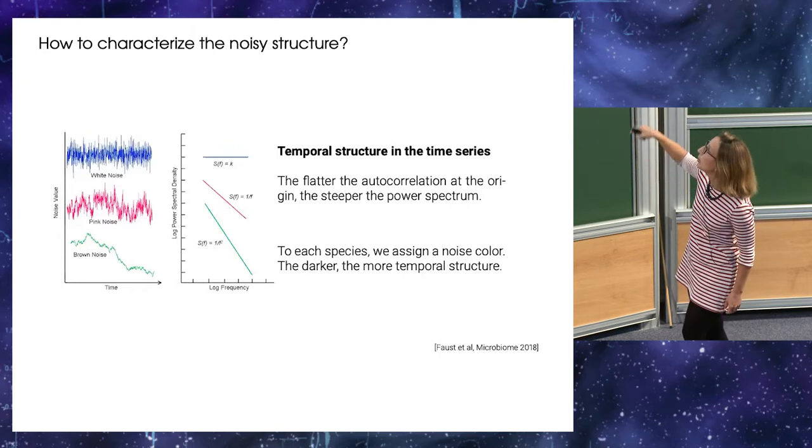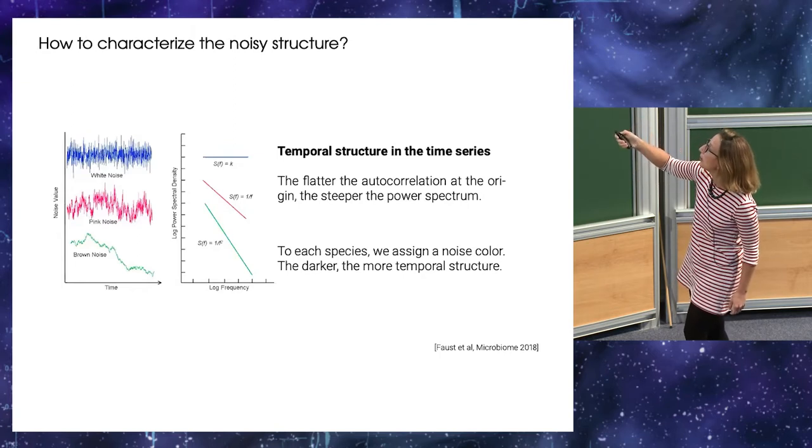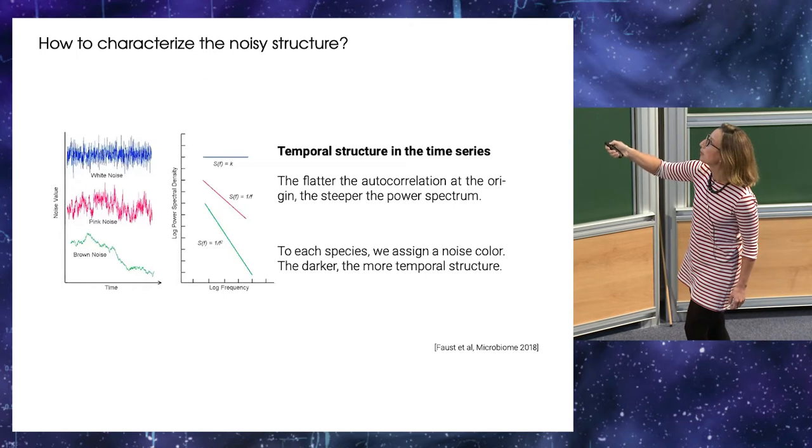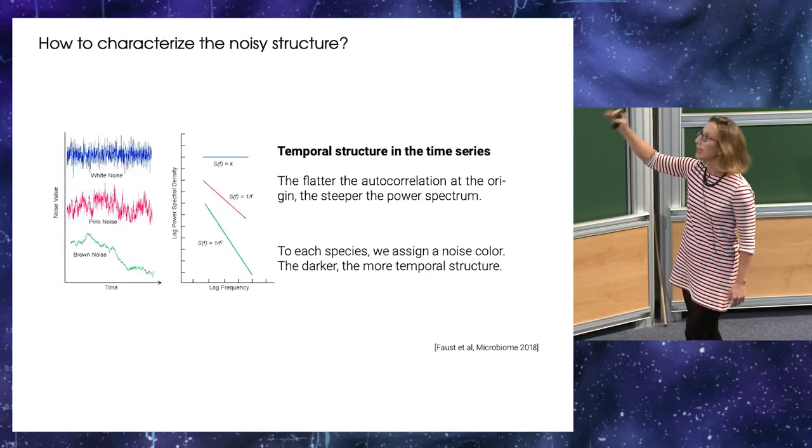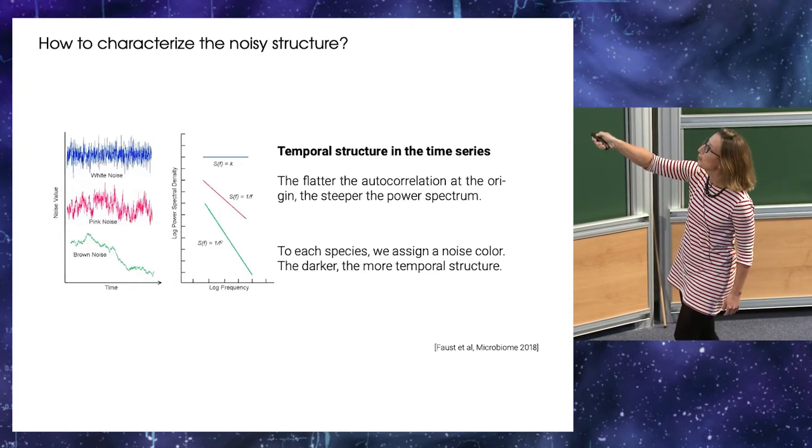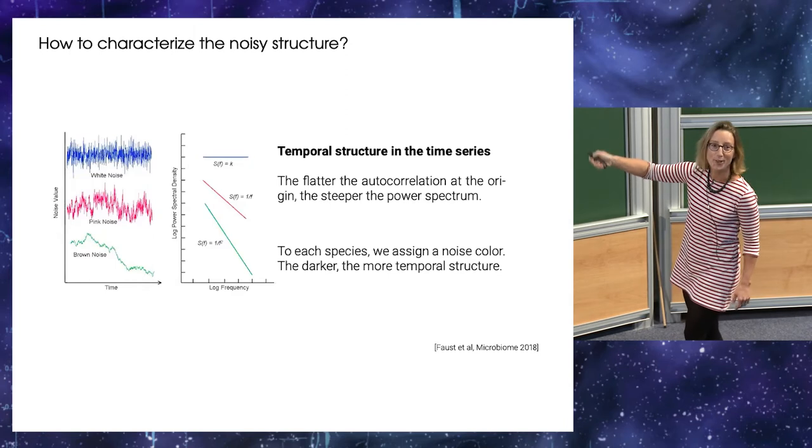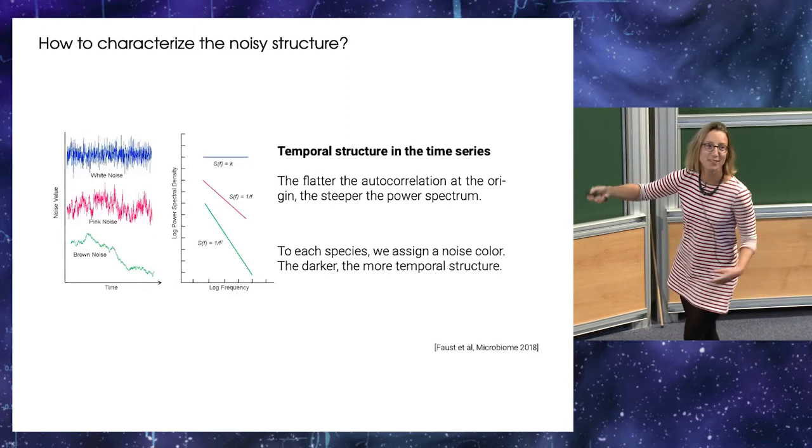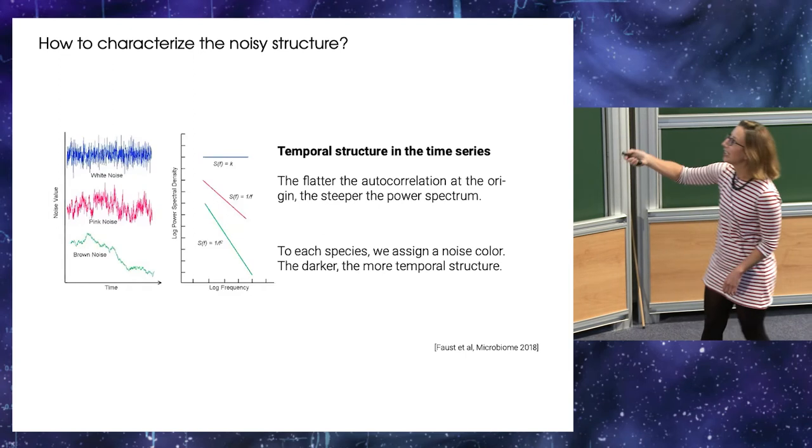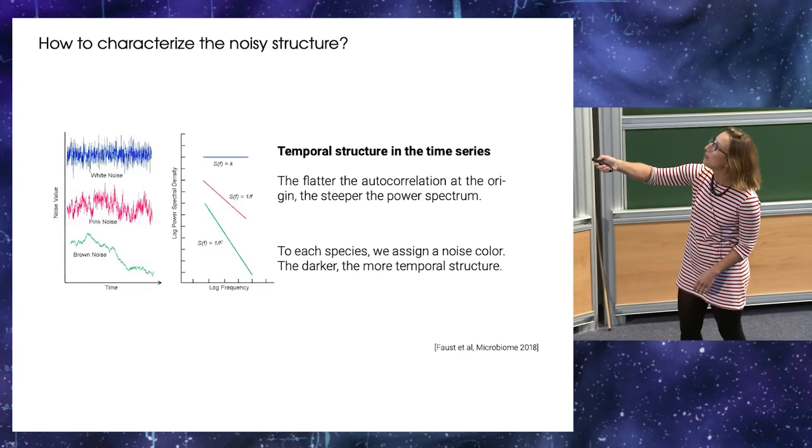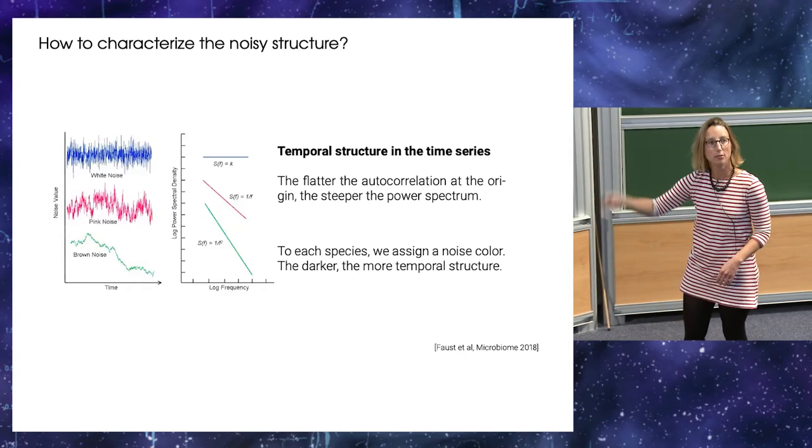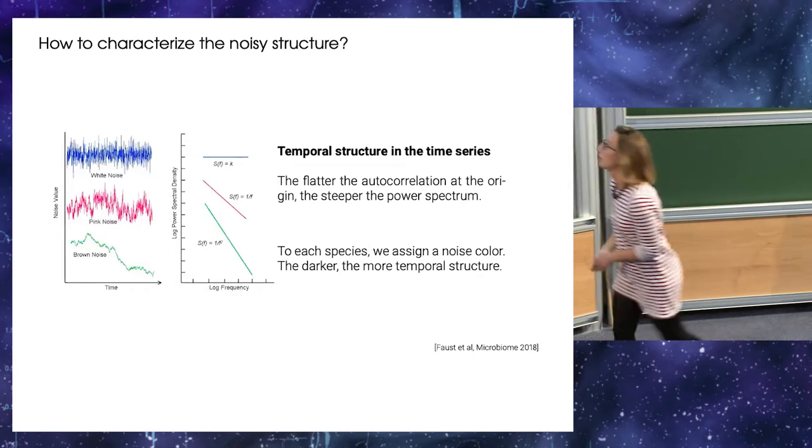If you have pink noise, you will have a spectrum in one over s, so the slope is minus one. Brownian dynamics, you will have a slope of minus two. And we associate, this is really bad choice, because the white noise is blue, the pink noise is pink, but the brown noise is green. So we use a scale where it's white, pink, brown, and the darker, the more temporal structure there is in the community.